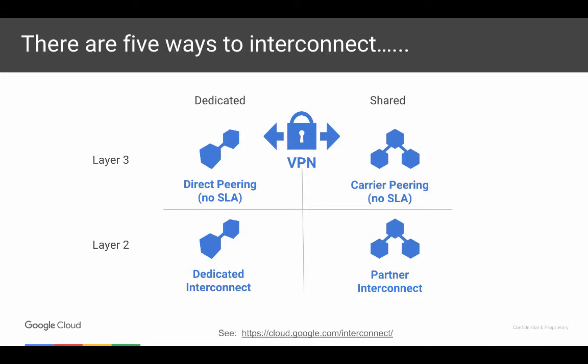When it really boils down, there are five ways to interconnect with the GCP environment. This slide shows a simplified way of how to think about these. The matrix provides a couple of networking layers on the left — whether you're talking about Layer 2 or Layer 3 of the networking stack — and then whether it's a dedicated or shared interconnect. Dedicated is where you're connecting directly to Google's edge, whereas shared is where you and a few other customers connect to a partner, and that partner connects to Google.